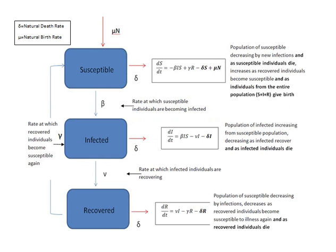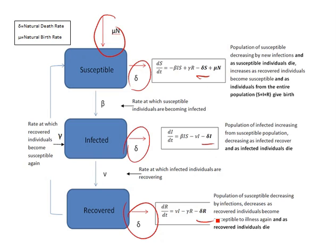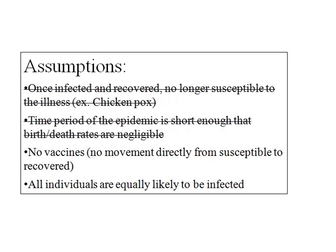The next change we will make is adding birth and death rates into this model. This is necessary for diseases that persist over a long period of time, where we cannot assume that the total population remains constant throughout the lifespan of the disease. With this change, we have an additional way for each population to decrease, as well as the way that the susceptible population will be increased over time. The addition of natural birth and death rates allows us to expand the model's use to diseases that infect the population for longer periods of time, further eliminating one of our earlier assumptions.